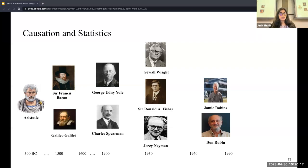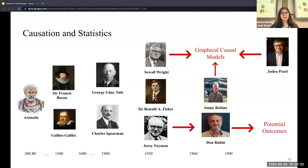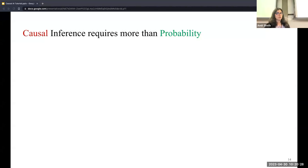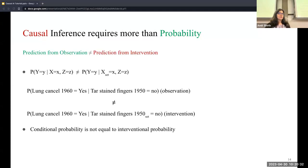Jamie Robins took ideas from Sewall Wright, along with Judea Pearl, and came up with graphical causal models. For this tutorial, we'll be focusing on graphical causal models. Causal inference requires more than probability — prediction from observation is not equal to prediction from intervention.